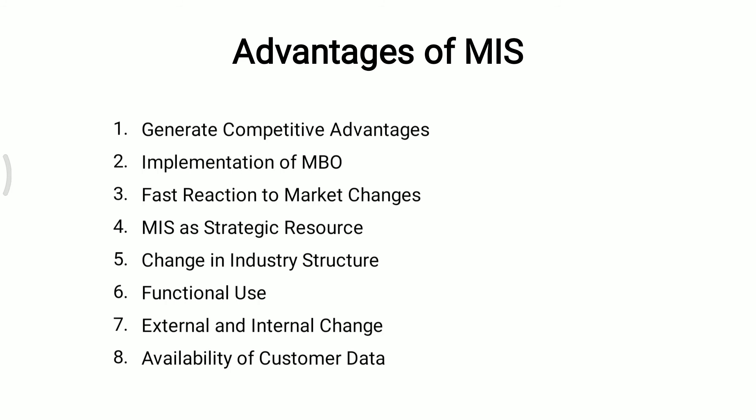Eighth is availability of customer data. MIS gives an overall picture of the company and acts as a communication and planning tool. The availability of customer data and feedback can make business houses align their business processes according to the needs of the customer. The effective management of customer data can help the company to perform direct marketing and promotion activities. MIS provides this data easily.